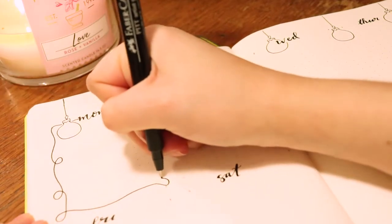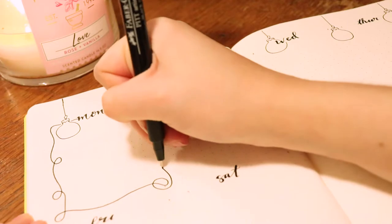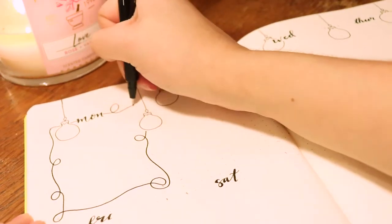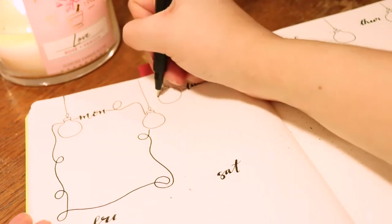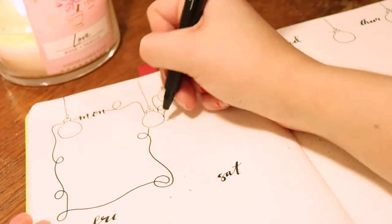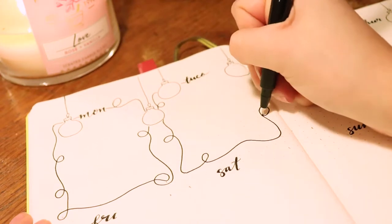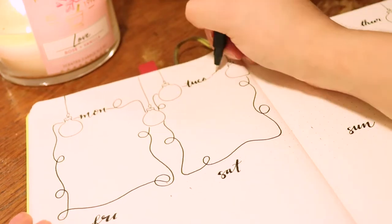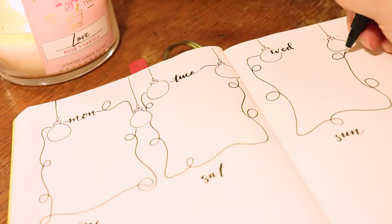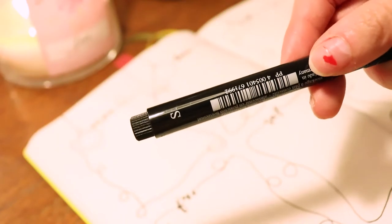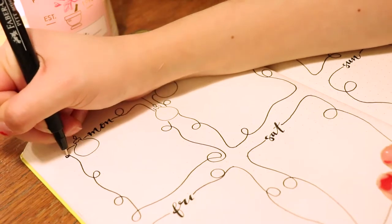As you can see, since I already mapped out where all of the squares are going to lie, I'm now drawing officially with my permanent pen. I'm drawing the little string of the Christmas lights. The reason I went in with pencil first before going in with pen obviously is because I wanted to basically know where I should write the days of the week.